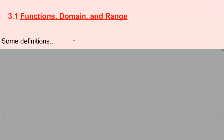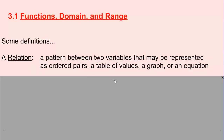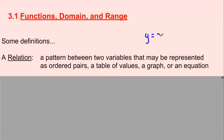So first, some quick definitions. We'll start with a word called a relation. In mathematics, a relation is just a pattern between two variables that may be represented as ordered pairs, a table of values, a graph, or even an equation. We've seen many relations in our career as math students. For example, something like y equals x plus 3 would be a relation.